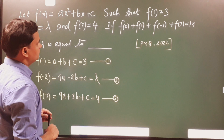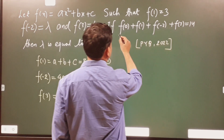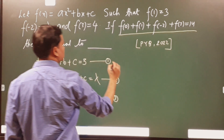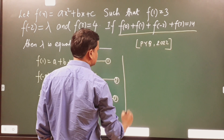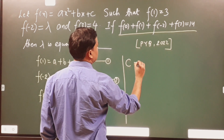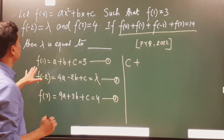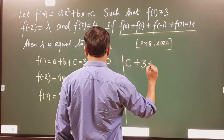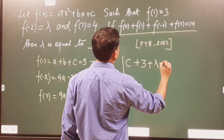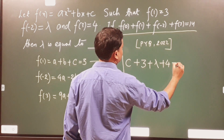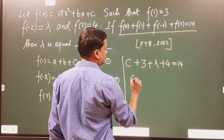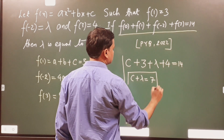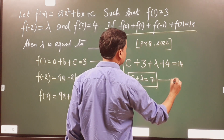Now let us also look at f(0). What will be f(0)? f(0) will be nothing but c. So in place of f(0) I am writing c. f(1) is 3, f(-2) is lambda, and f(3) is 4, giving a sum of 14. From here I can write c + lambda = 7. This is another condition — equation number 4.